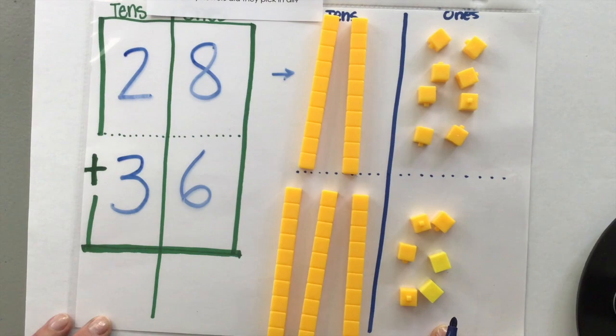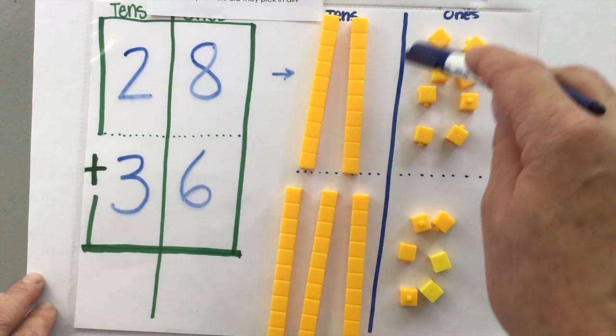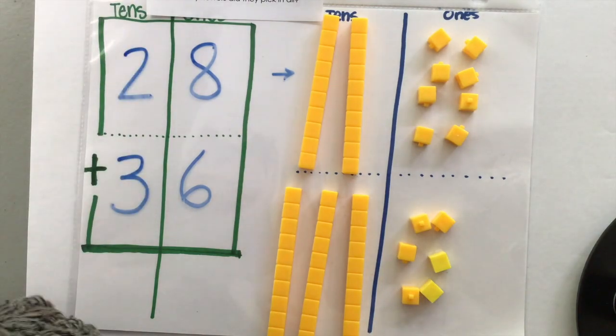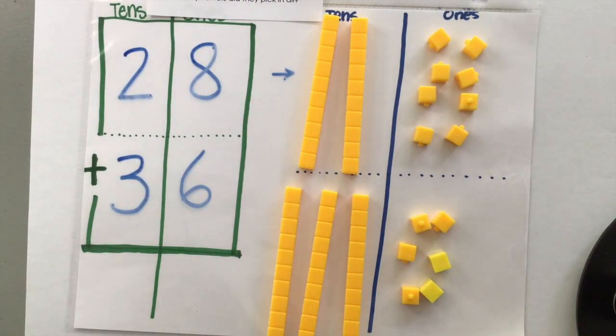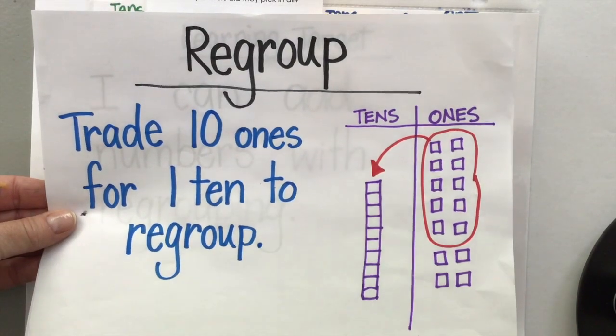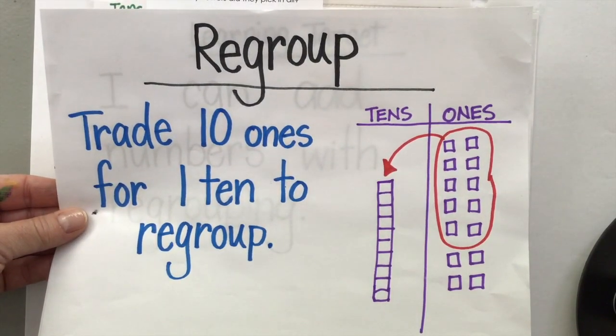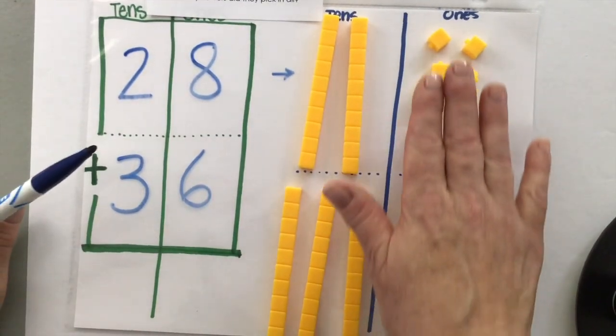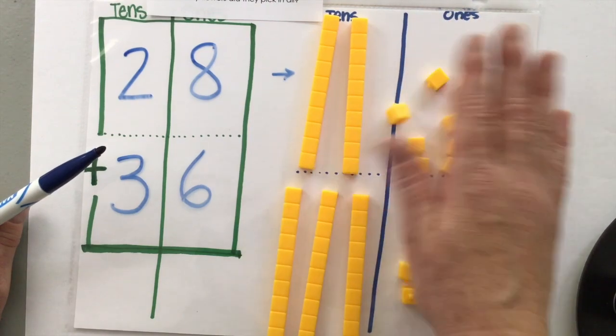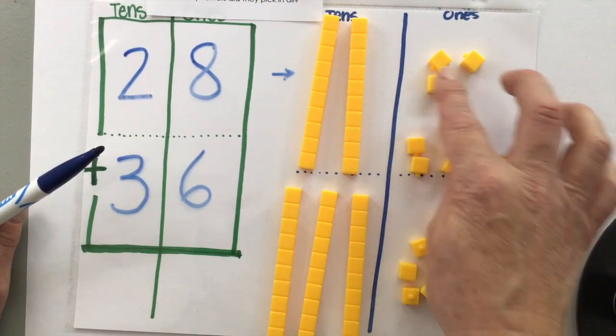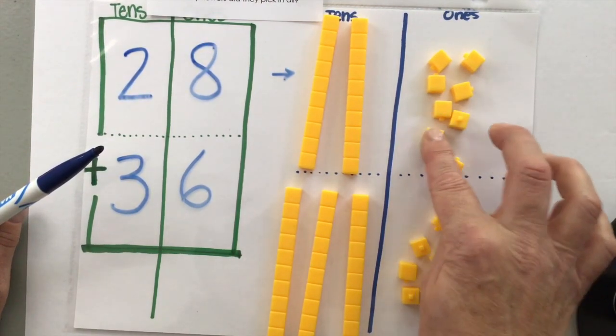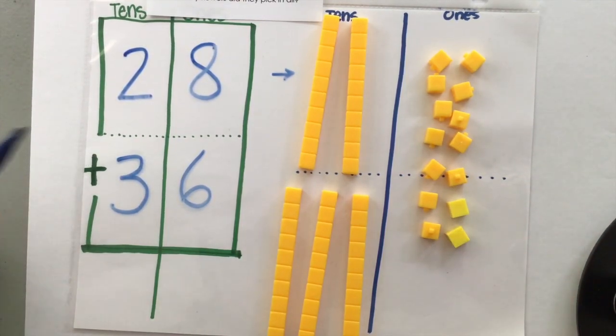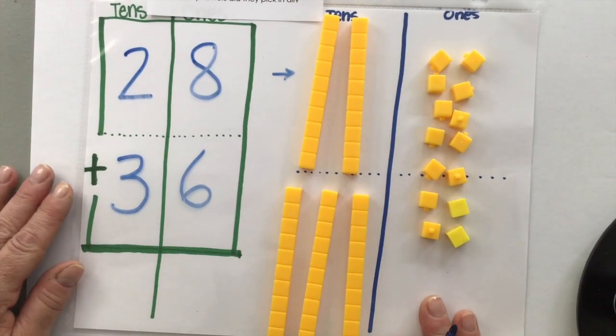So the first step is that we add our ones together. And we need to decide if we need to regroup. Can I trade 10 ones for 1 ten? That's regrouping. All right. So let's add our ones together. 1, 2, 3, 4, 5, 6, 7, 8, 9, 10, 11, 12, 13, 14. I have 14 ones.